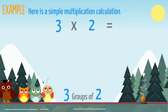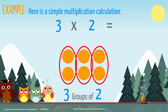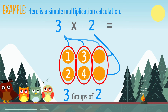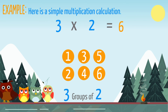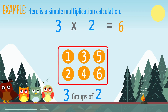We can draw a picture to show this calculation. To find the answer, we just need to count all the dots to see how many we have altogether: 1, 2, 3, 4, 5, 6. So 3 multiplied by 2 equals 6. The special picture we can draw to show a multiplication calculation is called an array.